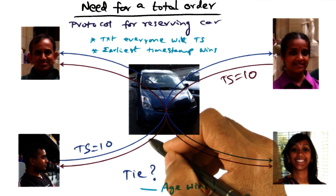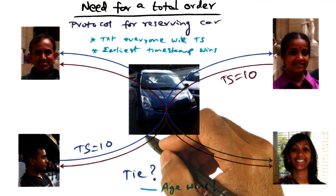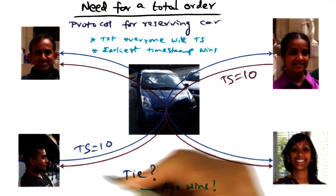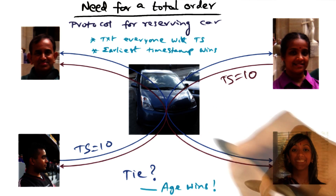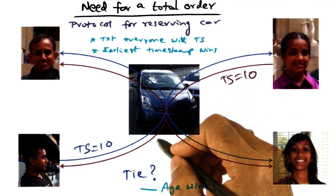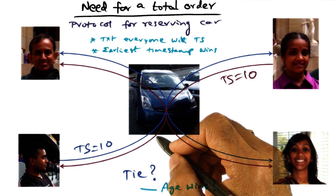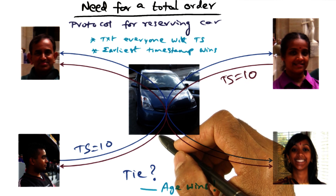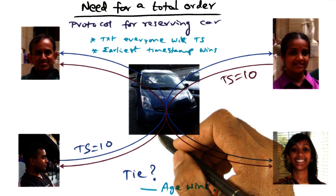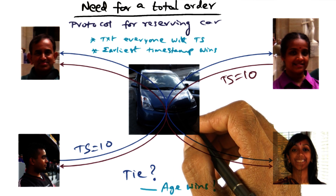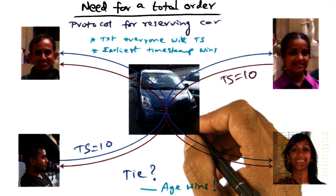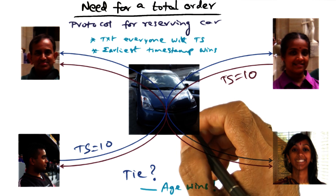I have one car, and my family consists of my wife, my son, and my daughter. We share this single car. What we want to do is make sure that we can make local decisions on who gets dibs on using the car at any point in time, and we're going to use Lamport's clock for this.